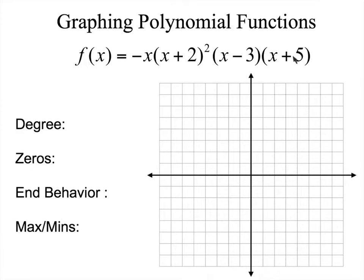Now, what is my degree? To get my degree, there's a first power, a first power, and another first power. So 1 plus 2 plus 1 plus 1 is 5. This is a fifth-degree polynomial.